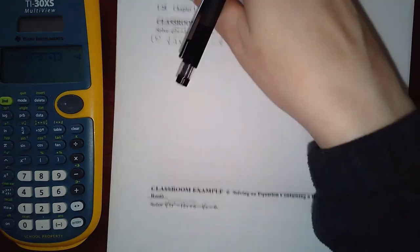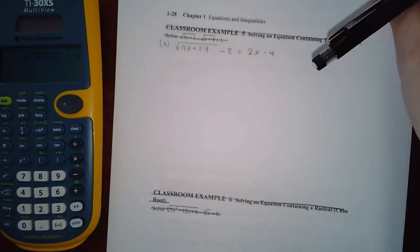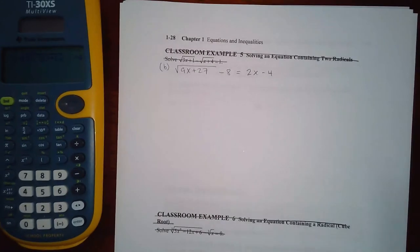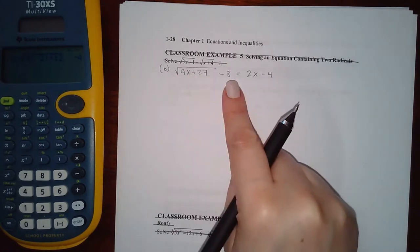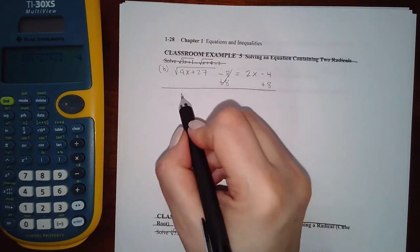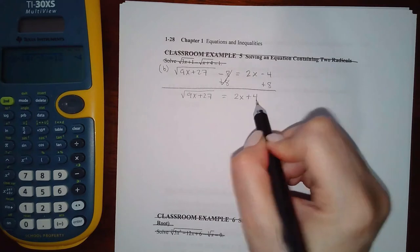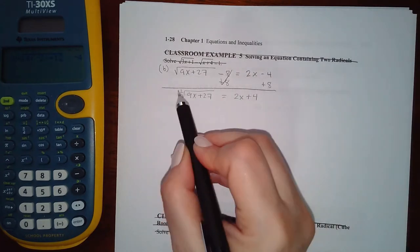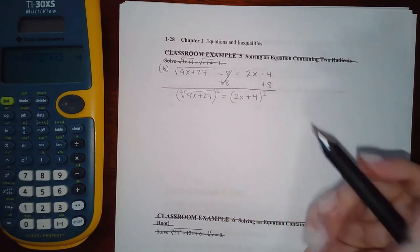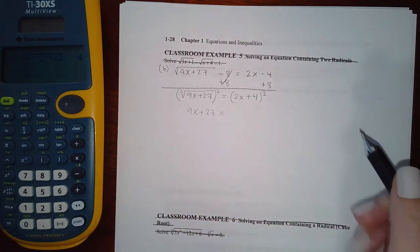Let's move on to another example — I believe this is the last one for this type of equation, and then we'll go into rational exponents in another video. In this problem, the radical is positive but it's not by itself, so I'll move the positive 8 over to isolate it.